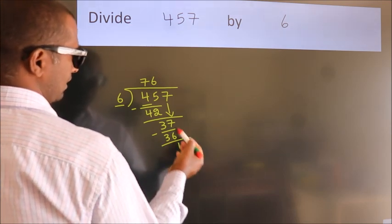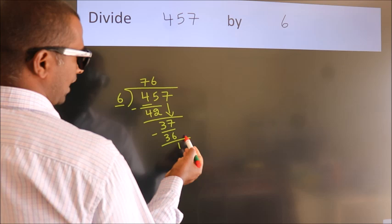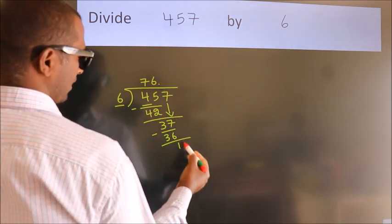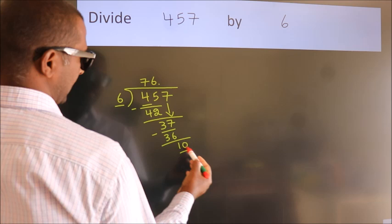After this, no more numbers to bring down. So, what we do is, we put a dot and take 0. So, 10.